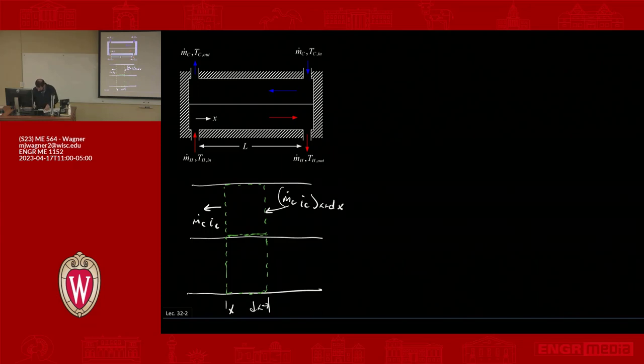So then we have coming in M dot C IC at X plus DX. On the hot side, in the other direction, we have M dot H I H. And then going out, we have M dot H I H at X plus DX.